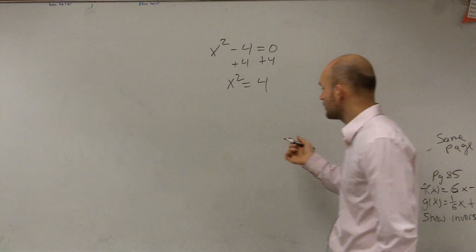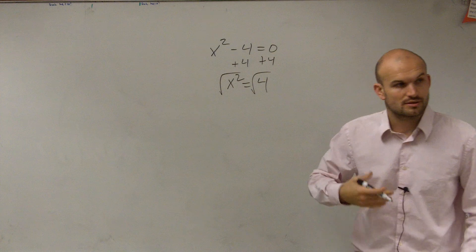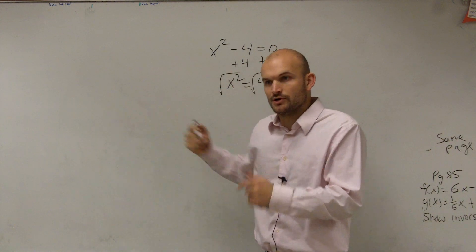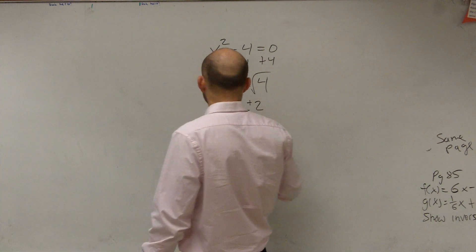Then to follow this, you need to take the square root. So now, when we introduce the square root, the square root wasn't there before. I introduced the square root. Now, we have to make sure we account for positive and negative 2.